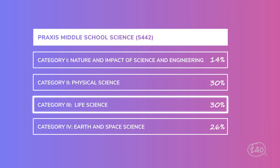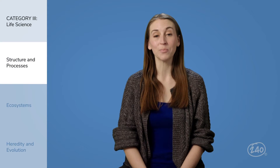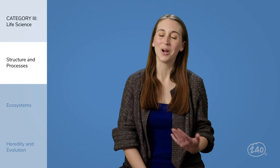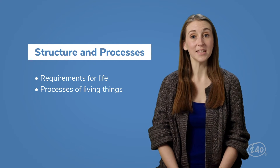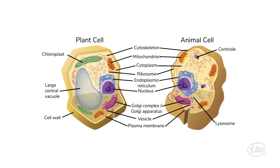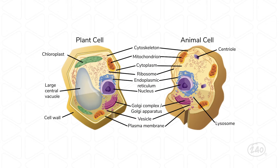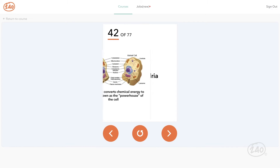Let's tackle life science, which makes up about 30% of your exam. Here you're going to need to know about the structure and processes of living things, all about ecosystems, and heredity and evolution. Structure and processes is all about the, well, structure and processes of living things — understanding what qualifies something as alive, all the processes an organism does to stay alive, human body systems, and cells. There's a ton on cells. You'll need to know the difference between plant and animal cells and what all the organelles do. Like how plant cells have cell walls while animal cells don't, and that the mitochondria are the powerhouses of the cell. We've got a ton of flashcards in our app you can use to quiz yourself.